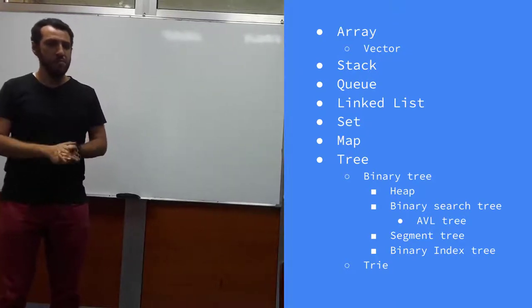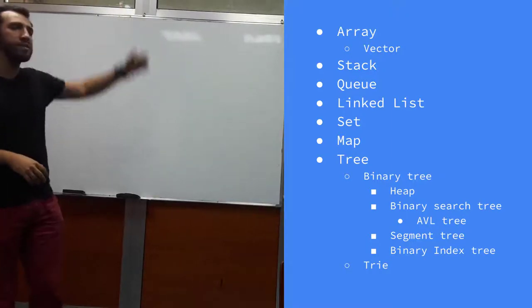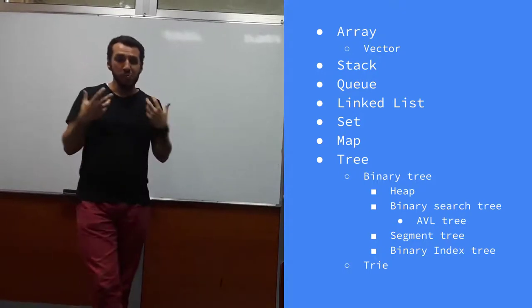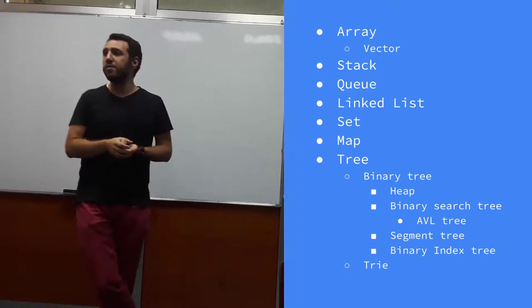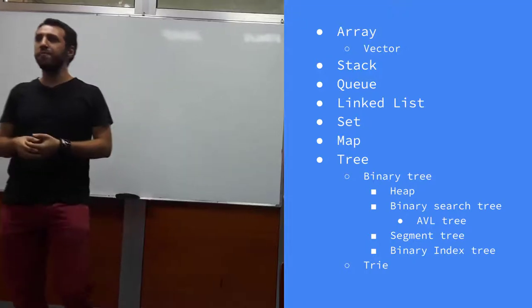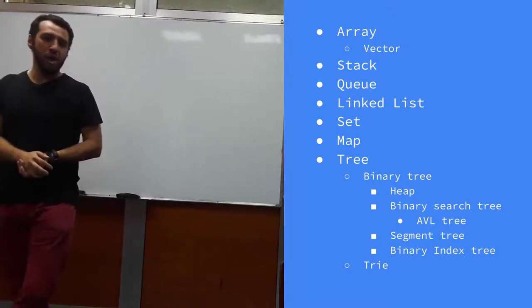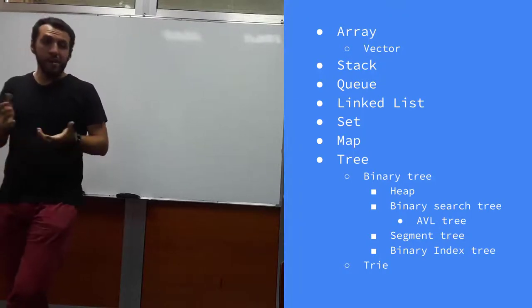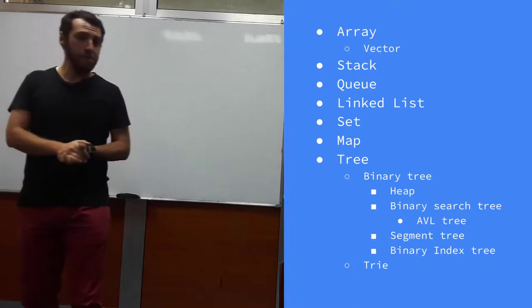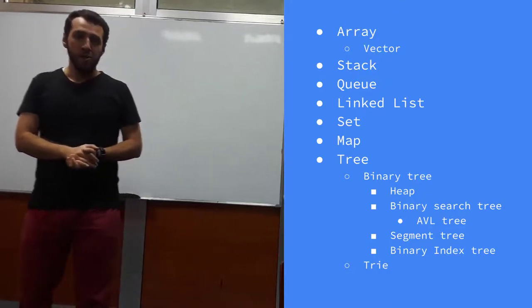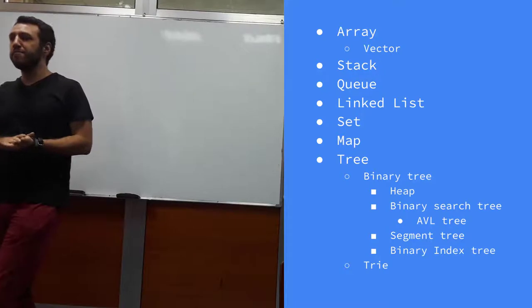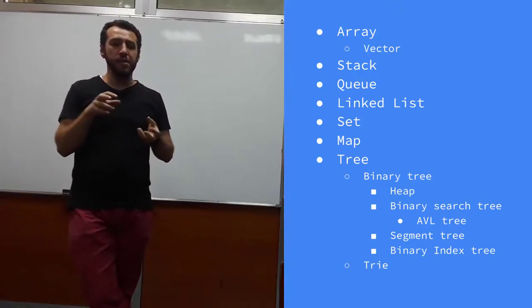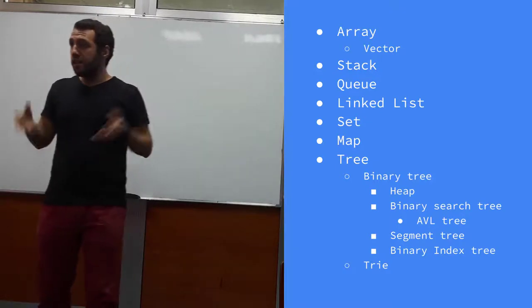We are going to cover pretty much all data structures during this course. Obviously the basic one is arrays — we are all familiar with those. In C++ they are called vectors, in Java array lists, and Python has something similar. These are dynamic arrays. We will also cover stacks, queues, linked lists, sets, maps, and trees.